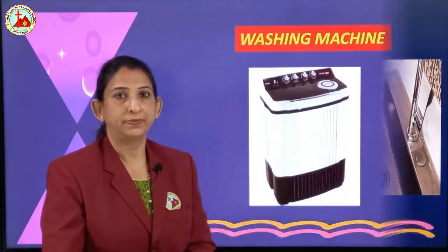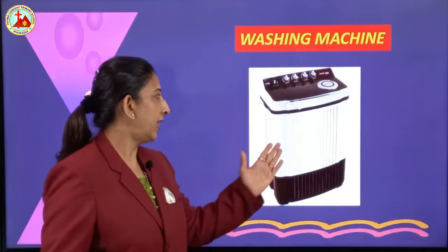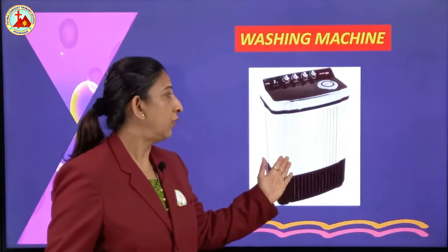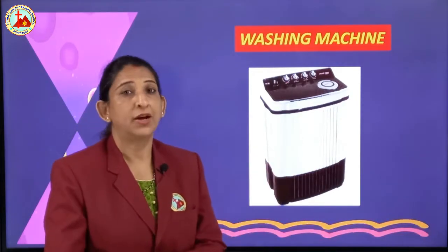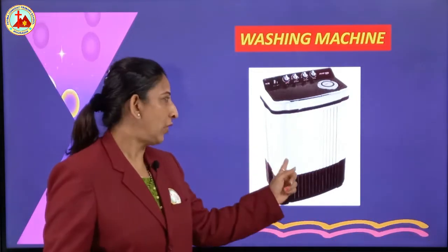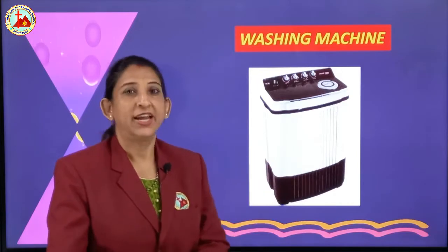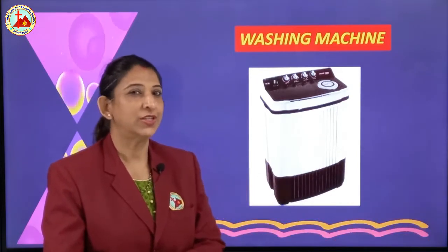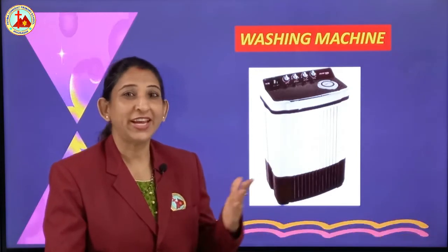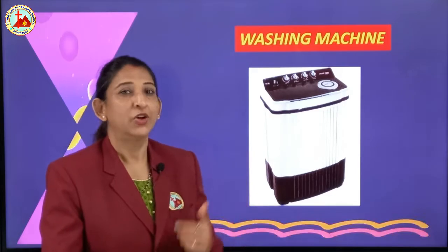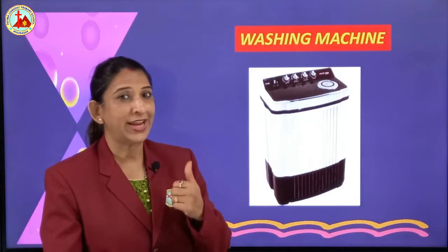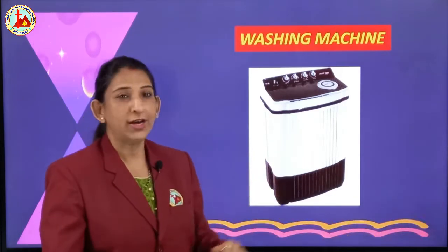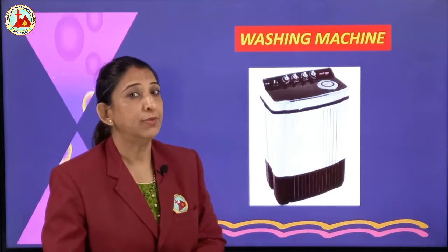Children, this is a washing machine. We wash our clothes in the washing machine and it also dries our clothes, so the work is very quick — washing and drying the clothes. This is called washing machine.